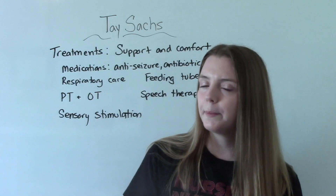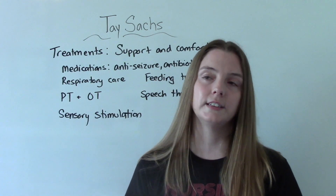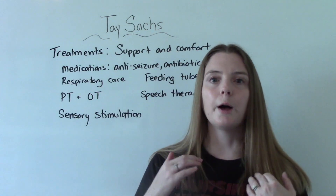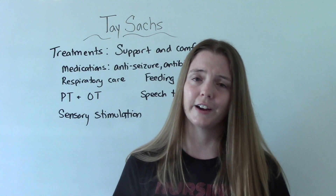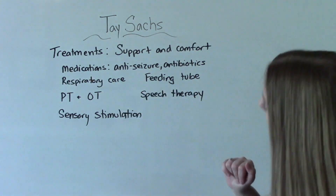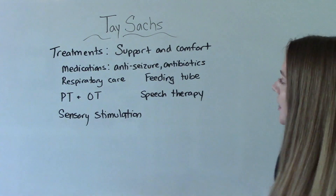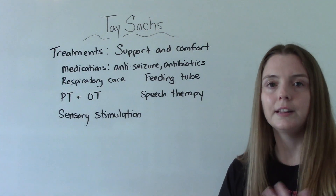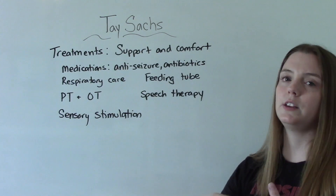When it comes to treatment and nursing interventions, we have to remember there is no cure for this disease. It's going to be more focused on supportive measures, comfort measures, ensuring a good quality of life, and preventing complications like respiratory infections. We can give medications to help with seizures or antibiotics to help with infections, ensure good respiratory care, and eventually when they lose their ability to swallow, they're going to need a feeding tube — enteral nutrition and then maybe even TPN.